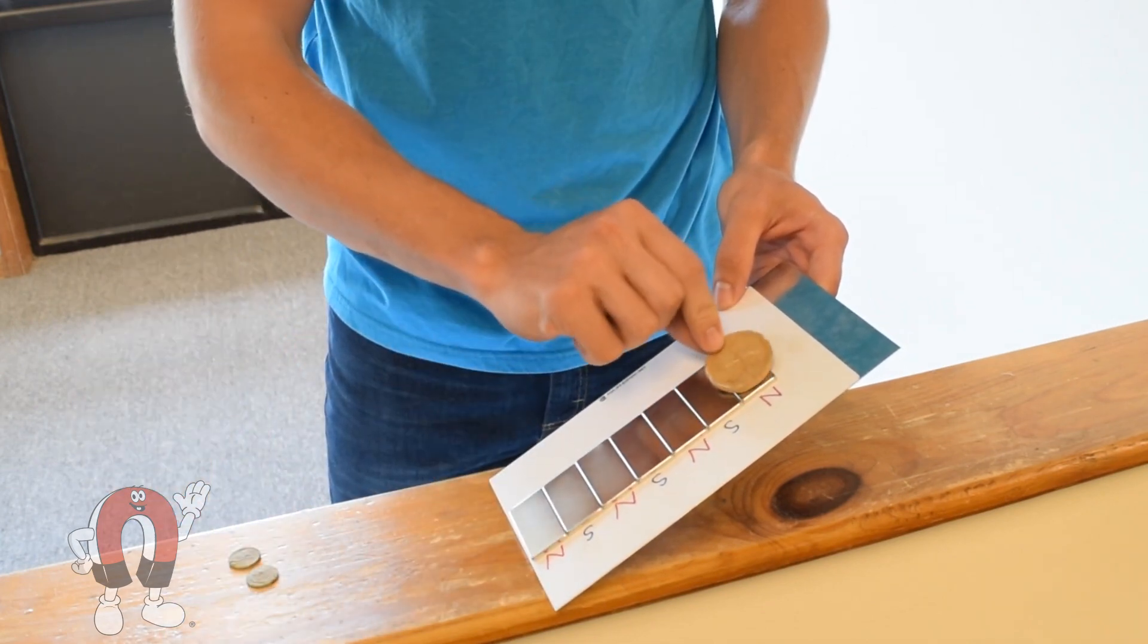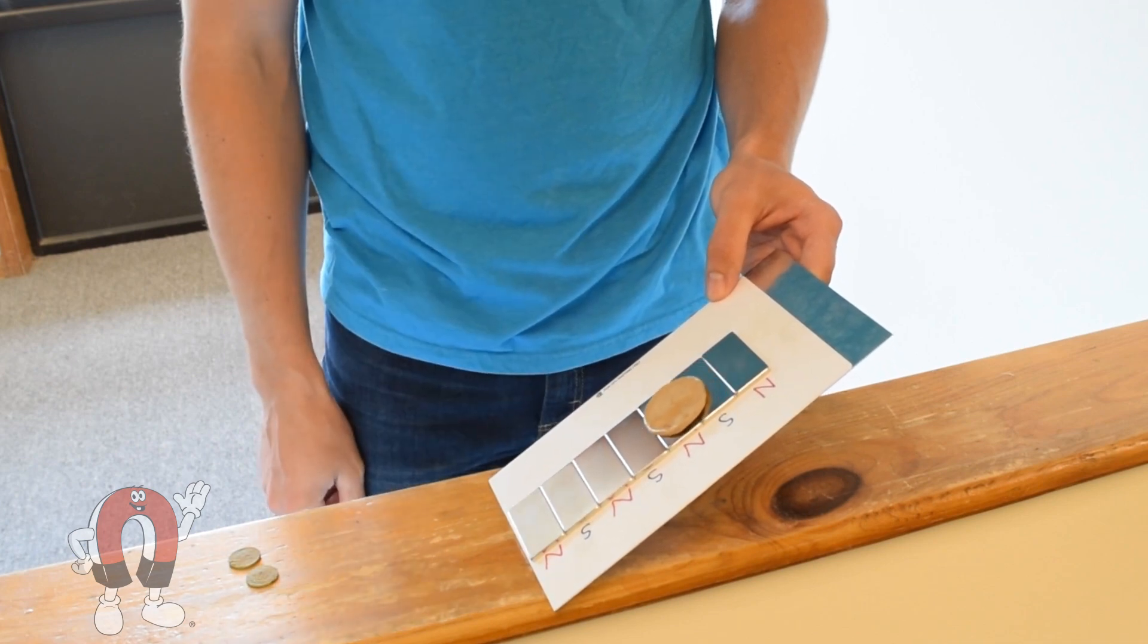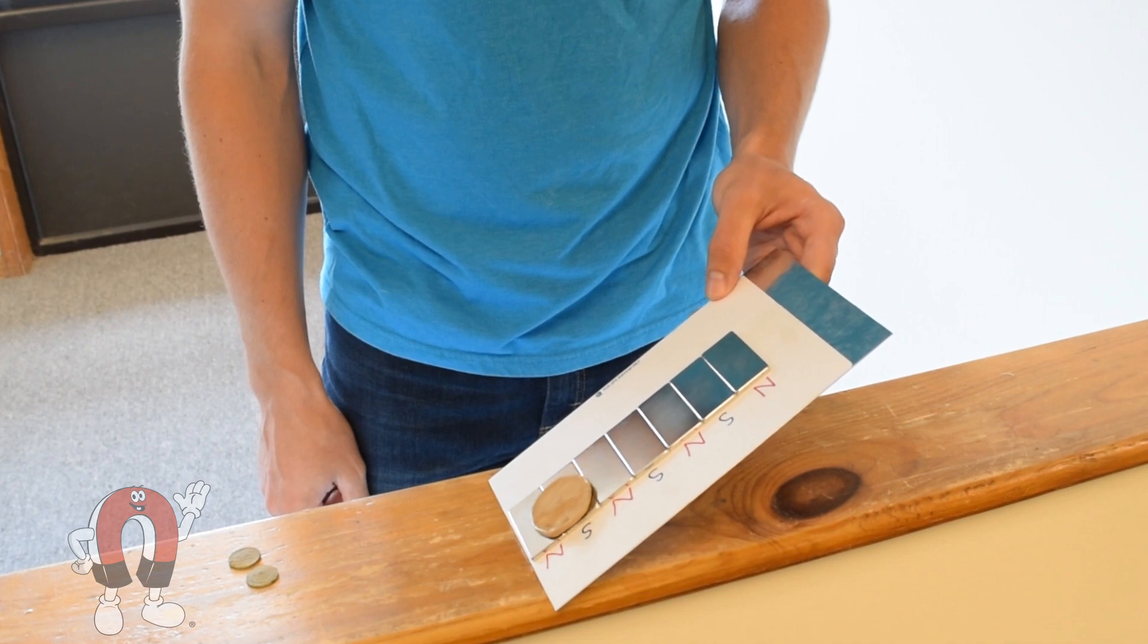This early 19th century tin lid must be made out of some conductive material. It's so light, maybe even 100% tin, because it slides very slowly.